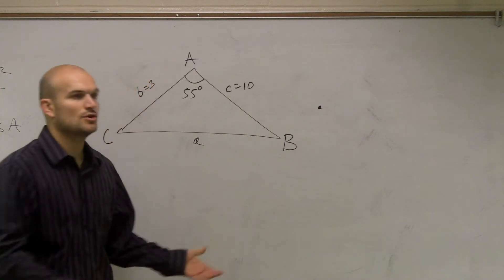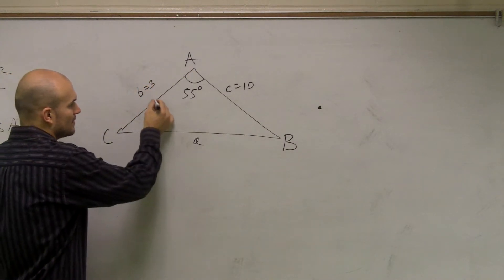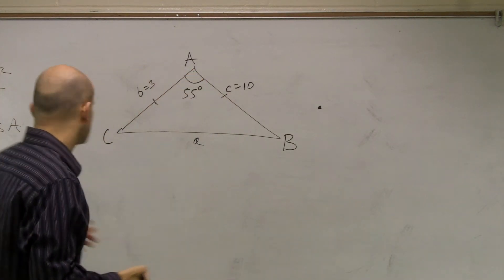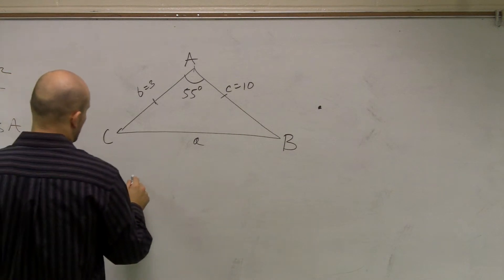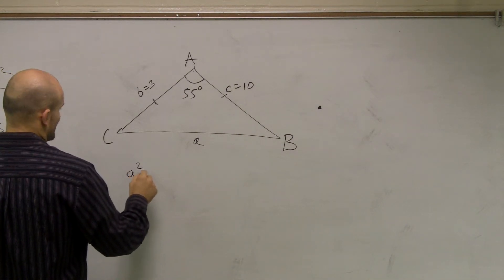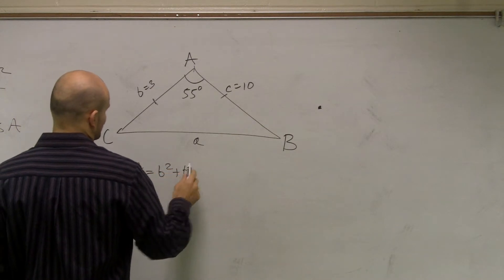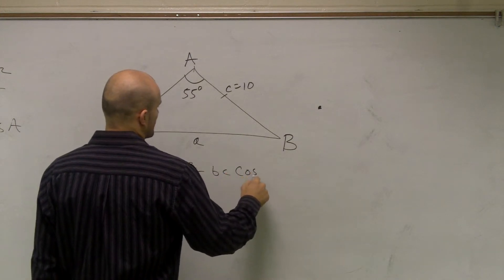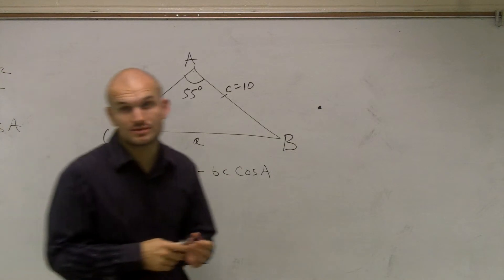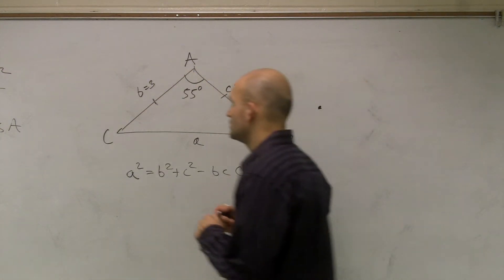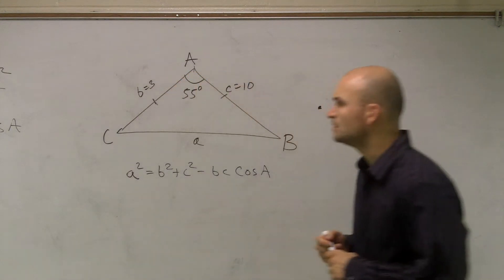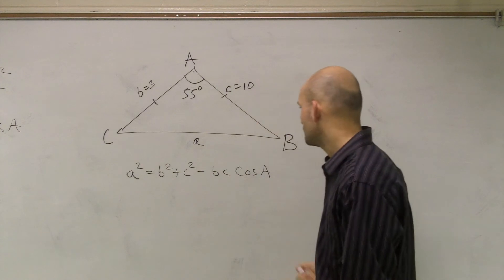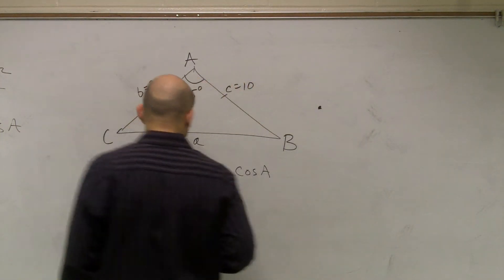To use the law of cosines, we just have to go through what we have. We have side length B, side length C, and the cosine of A. So the only law of cosines we can use is the one for side length A, where A squared equals B squared plus C squared minus two BC times cosine of A. This is the only one we can use. Minus two BC, cosine A — yes, minus two BC, thank you.